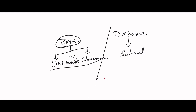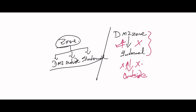In the infrastructure, the DMZ zone going to internal is not natural — it requires manual access at the firewall level. Internal going to DMZ is okay, but internal going to outside is not entirely natural, and outside to internal is also not natural. Both require firewall-level or security-level access.